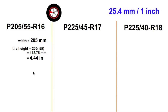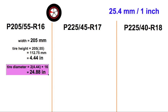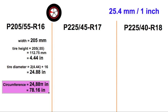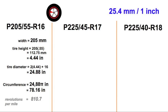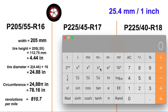Let's go through this fast, then pull out the calculator. For 205: the tire height is 55% of 205. The tire diameter is two times the tire height plus the wheel diameter. And if I want the circumference, I multiply that by pi. And here's an interesting number: how many revolutions will it make in a mile? We come up with almost 811. Let's slow that down and use a calculator.